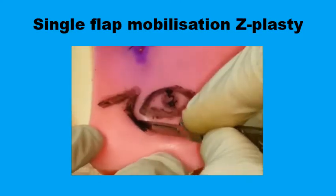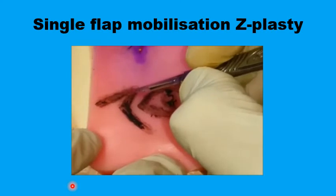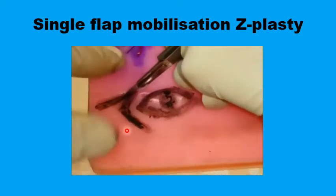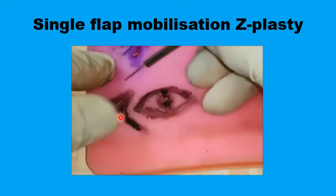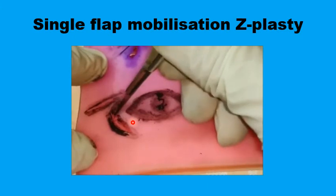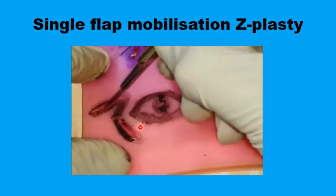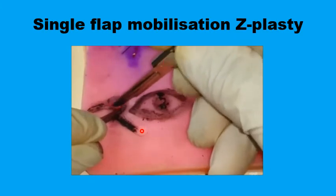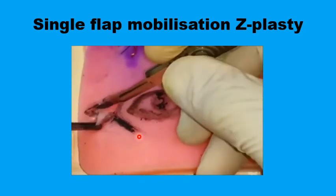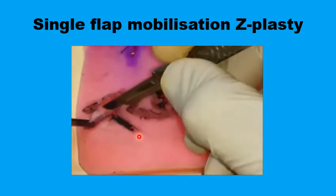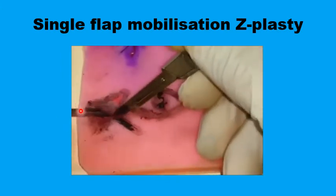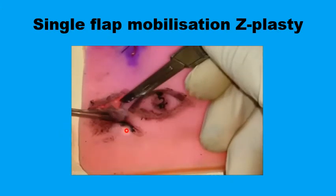One of the variants of this technique is the single flap mobilization of the Z-plasty. After planning the Z-plasty, the aim is to mobilize the flap with the acute angle with minimal disturbance to the flap with the wider angle, because it is in a critical position. The acute angle flap is mobilized by liberal undermining, and once the flap is created, it can be rotated through a wider arc to fill into the desired position.